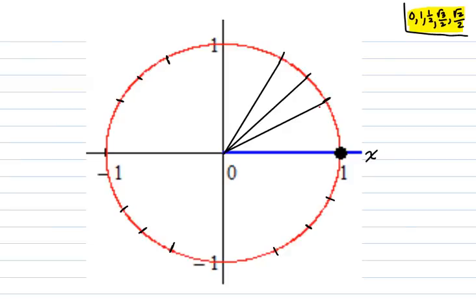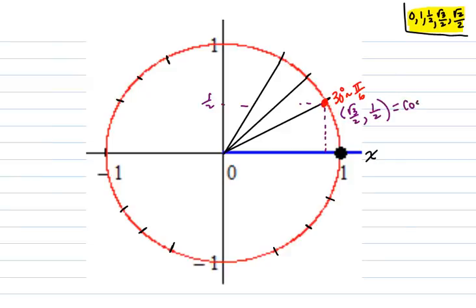Starting with this one: this is a 30-degree angle, coterminal to π/6. The point on the unit circle is the long x, which is √3/2, and the y is 1/2. The reason it doesn't look exactly right at one half is that I freehand drew these lines. So that terminal point means the cosine of π/6 is √3/2 and the sine of π/6 is 1/2.